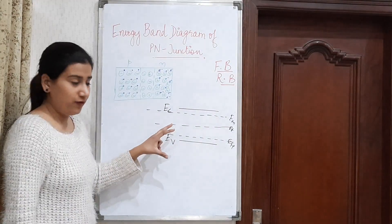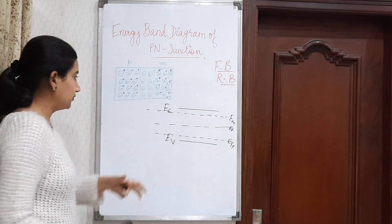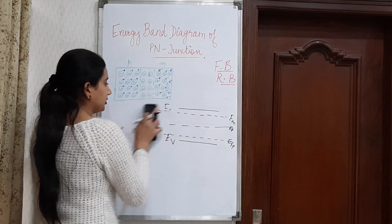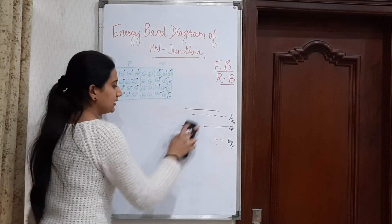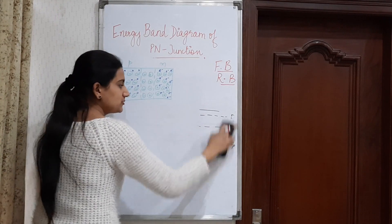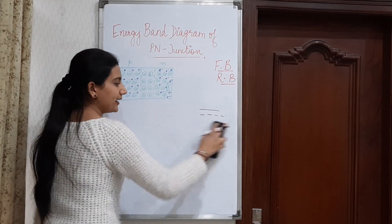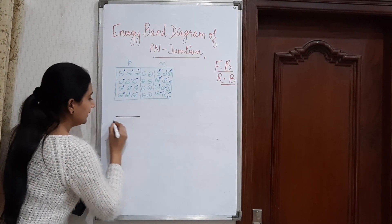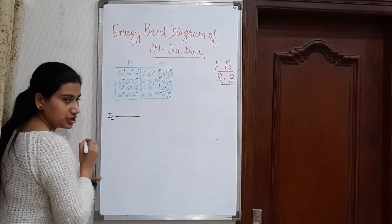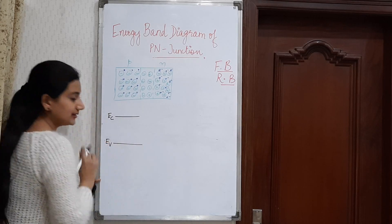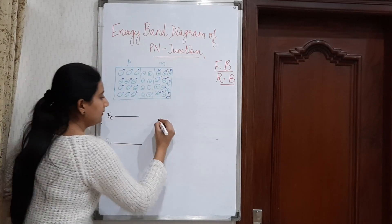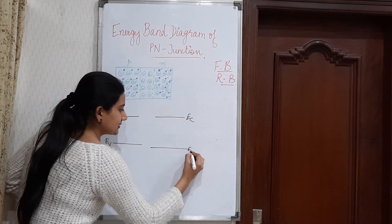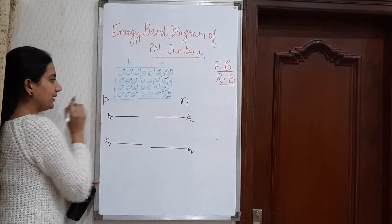Now, using this basic concept for a P-N junction — where we have P-type, N-type, and a depletion region — if we make the energy levels, our mind says: for P-type, let this be the conduction energy and this is the valence energy; and for N-type, this is the conduction energy and this is the valence energy.